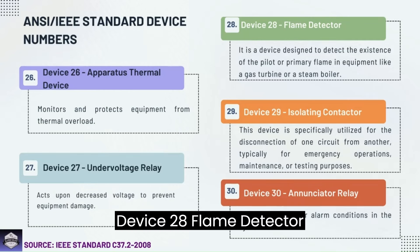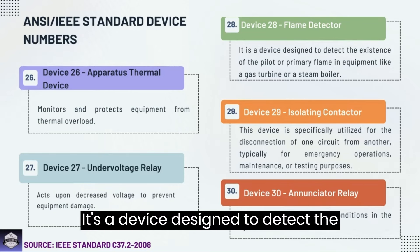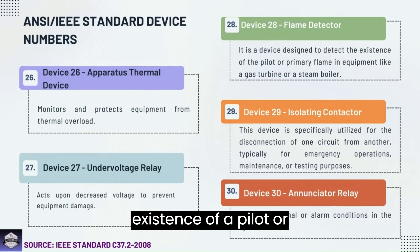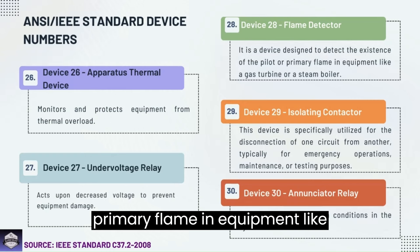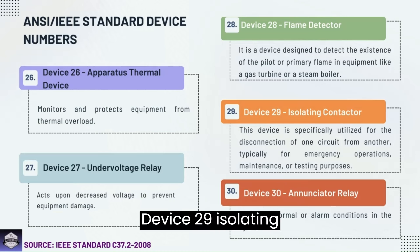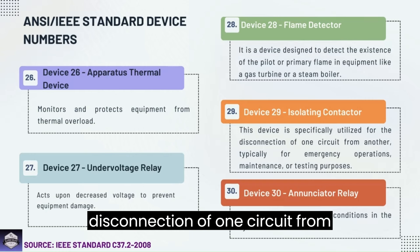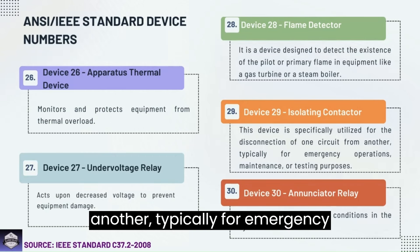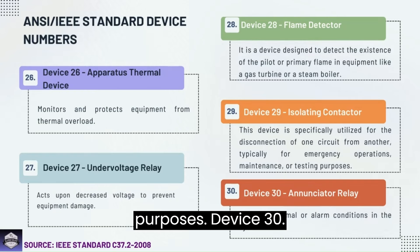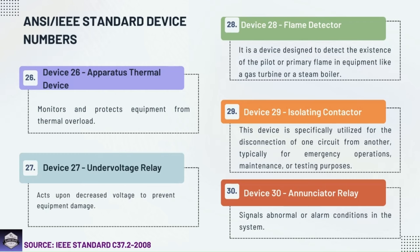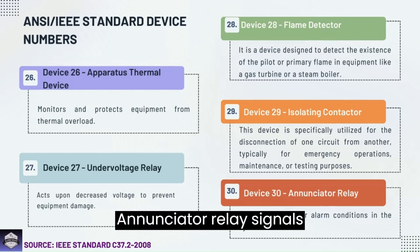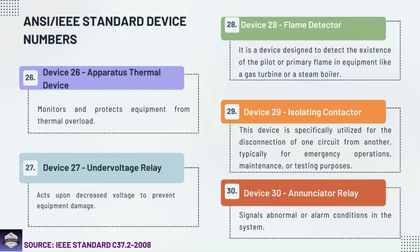Device 28: Flame detector — a device designed to detect the existence of a pilot or primary flame in equipment like a gas turbine or a steam boiler. Device 29: Isolating contactor — specially utilized for the disconnection of one circuit from another. Device 30: Annunciator relay — signals abnormal or alarm conditions in the system.